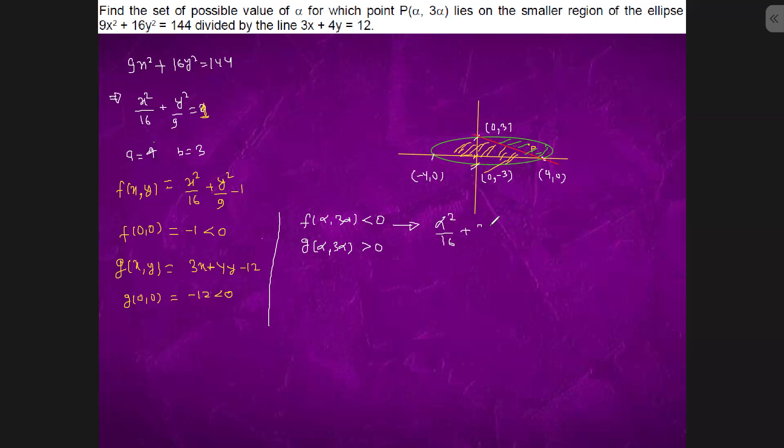Plus 9α²/9 - 1 should be less than 0. If we proceed further, it is (17/16)α² - 1 < 0.